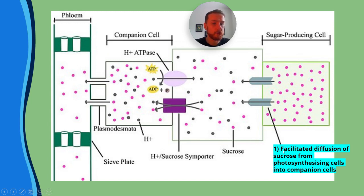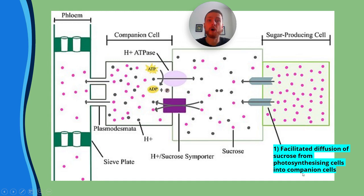Firstly, there'll be facilitated diffusion of sucrose from photosynthesizing cells into companion cells. These are transmembrane proteins that allow the transport of sucrose.